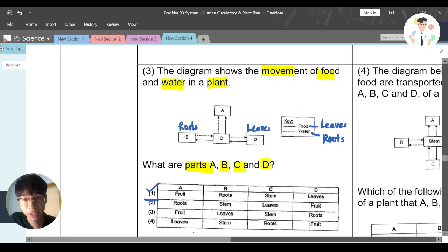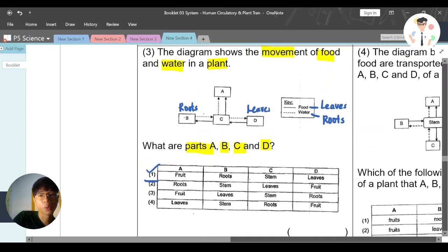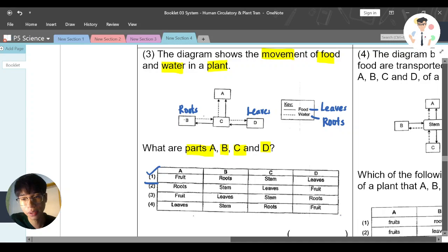Let's check. D is supposed to be leaf. Is it leaves? Yes. Simple. I know the answer is option number one.